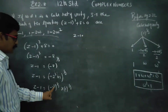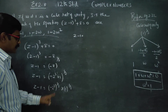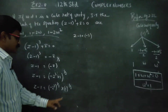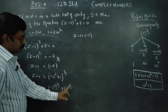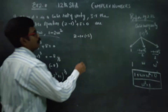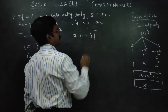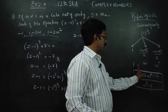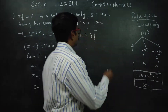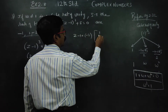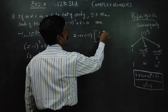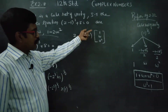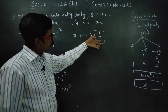Z minus 1 is equal to minus 2 power 3 whole power 1 by 3, which equals minus 2 into 1 power 1 by 3. Now, 3 answers are 1, omega, and omega square — the cube root of unity gives 3 answers: 1, omega, or omega square.